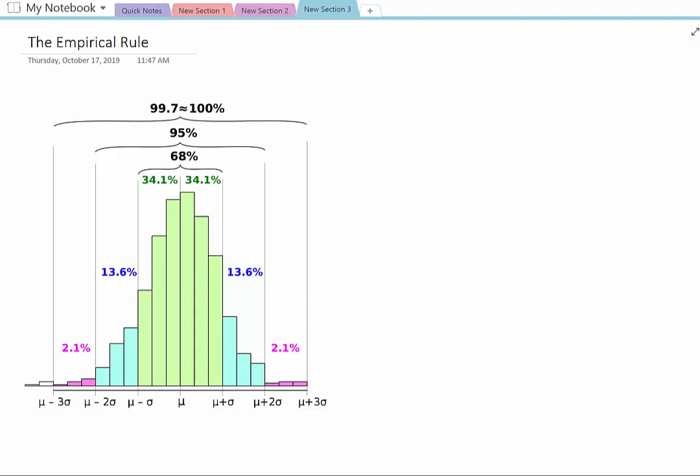Now we're discussing a very important symmetry for the curve. Let's look at our mean right here. So our mean is z-score zero, mean plus one standard deviation, which has a z-score of one.